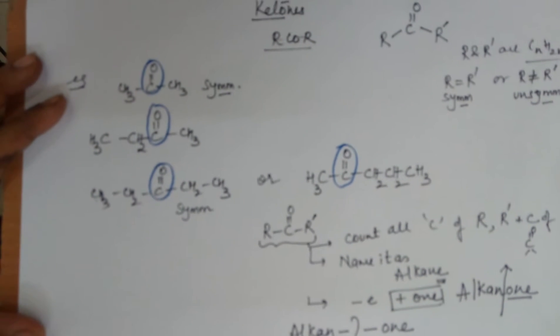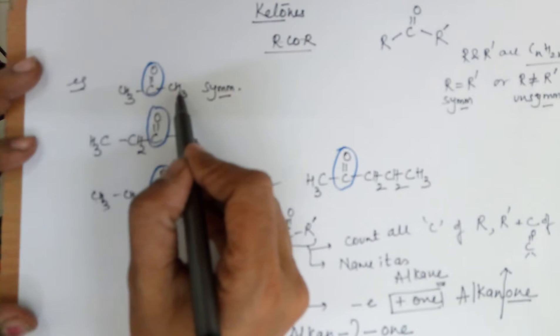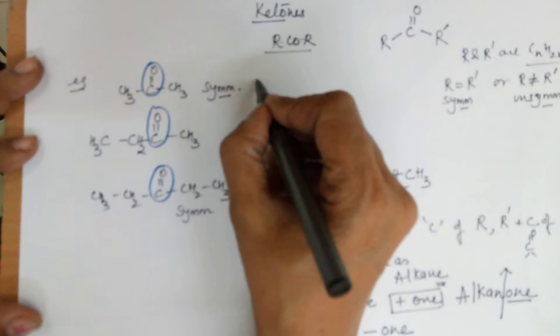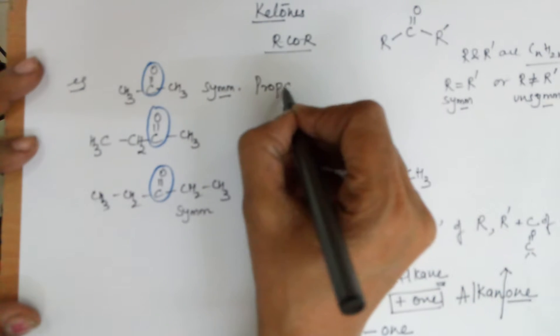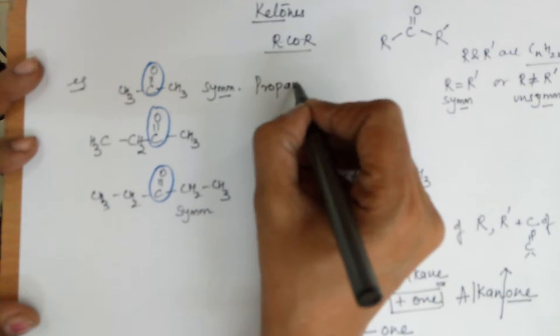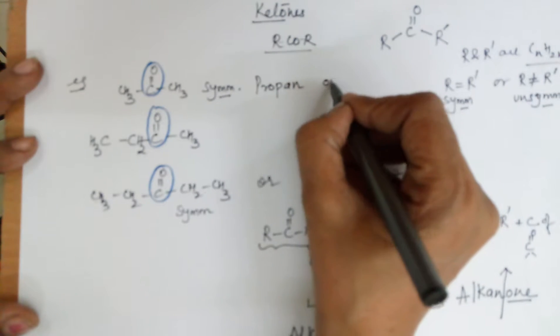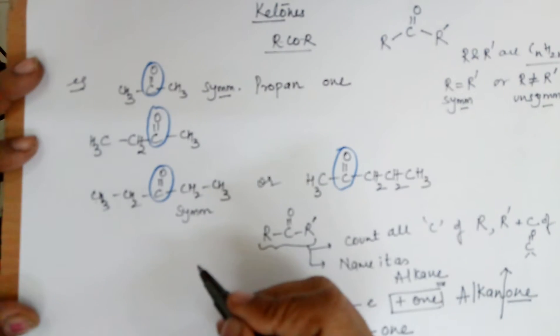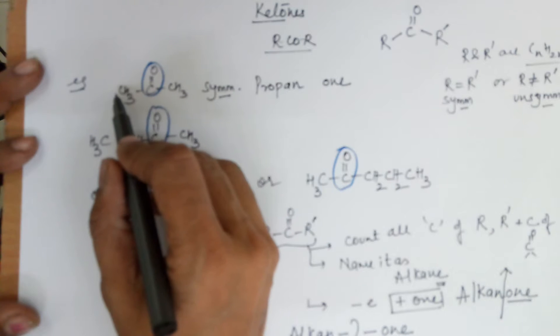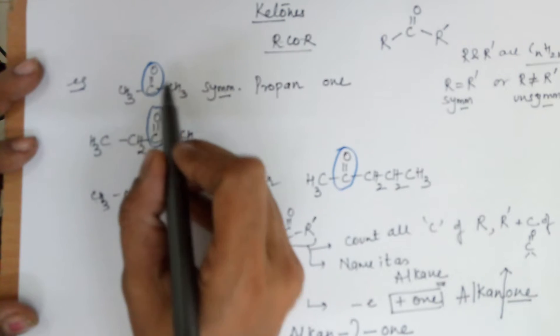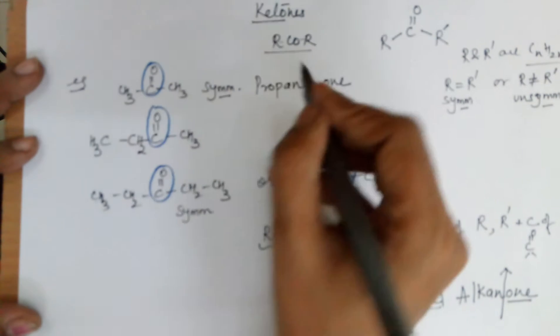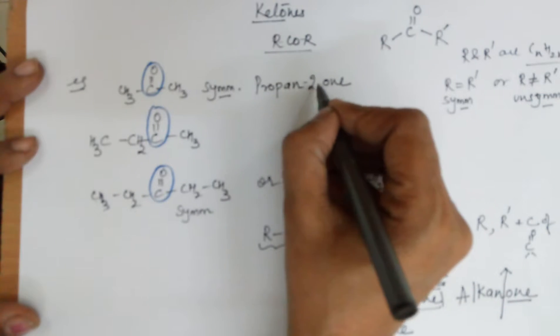Have a look at the first example. In the first example, what is the total number of carbons? Three. So the name is propane. I am removing the E and I need to add O-N. The ketone is at what carbon? The second carbon. If I count from here, it's the second carbon. If I count from here, it's again the second carbon. So it becomes propane-2-one.